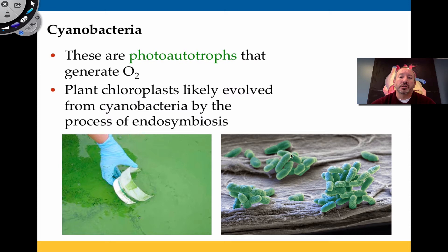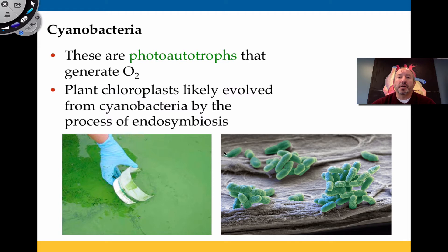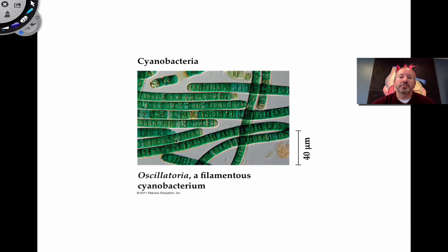We even believe that a plant cell's chloroplast evolved from these cyanobacteria. If I drew a plant cell, the chloroplasts are thought to have come from these cyanobacteria a long time ago in an ancient relationship known as endosymbiosis — in other words, these were once free-living organisms that became beneficial symbionts with plant cells. There's some cool research on this: if you were to sequence some of the genes of cyanobacteria, they're similar to the DNA found in chloroplasts. Here's a picture of the filamentous cyanobacteria.